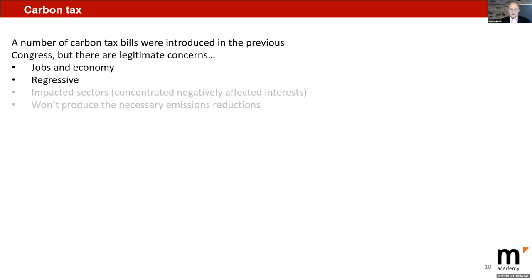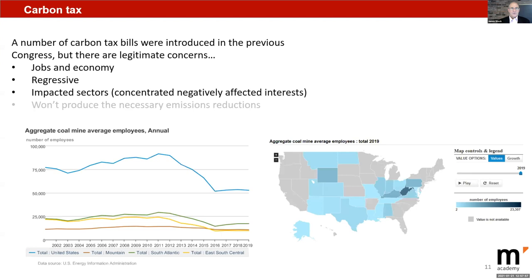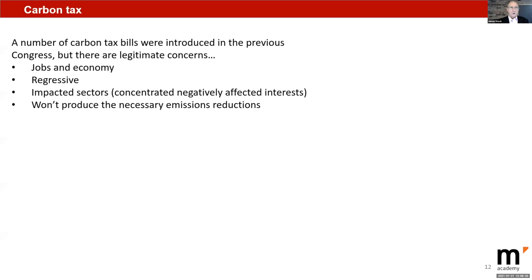There's also the regressivity concern — the standing approach is a fee-and-dividend where the bulk of revenues are redistributed on a lump sum basis, perhaps by region or rural/urban. There are legitimate concerns about impacted sectors: coal mining employed about 90,000 in 2011 and is now down to around 50,000, with very specific impacts in specific states. There's also the concern that a carbon tax alone won't produce the necessary emissions reductions — and I'll agree with that completely.